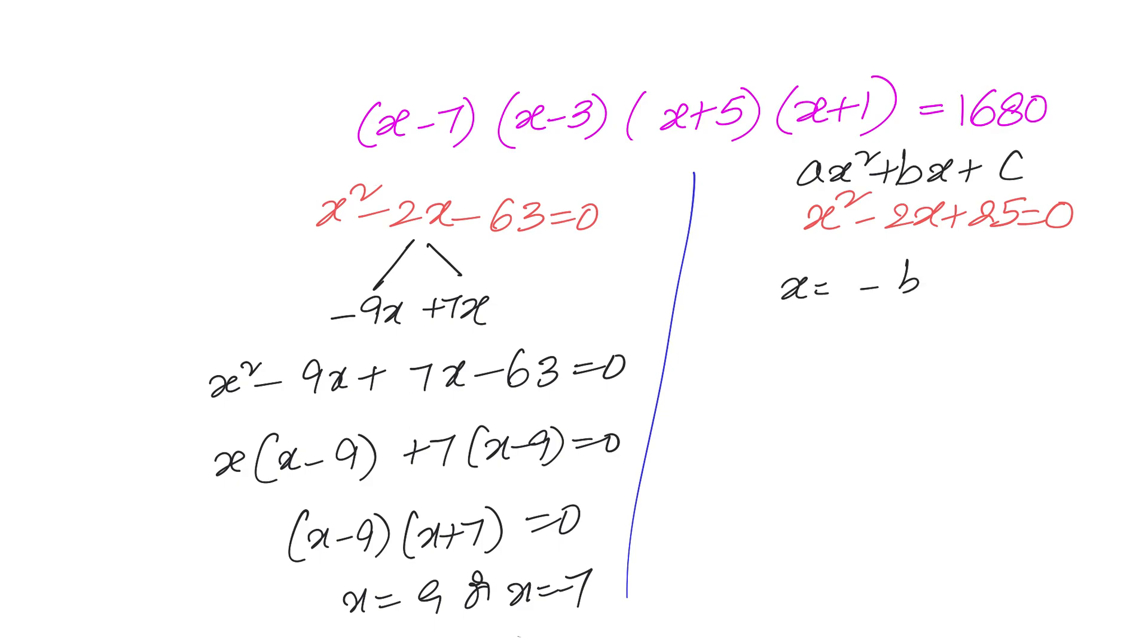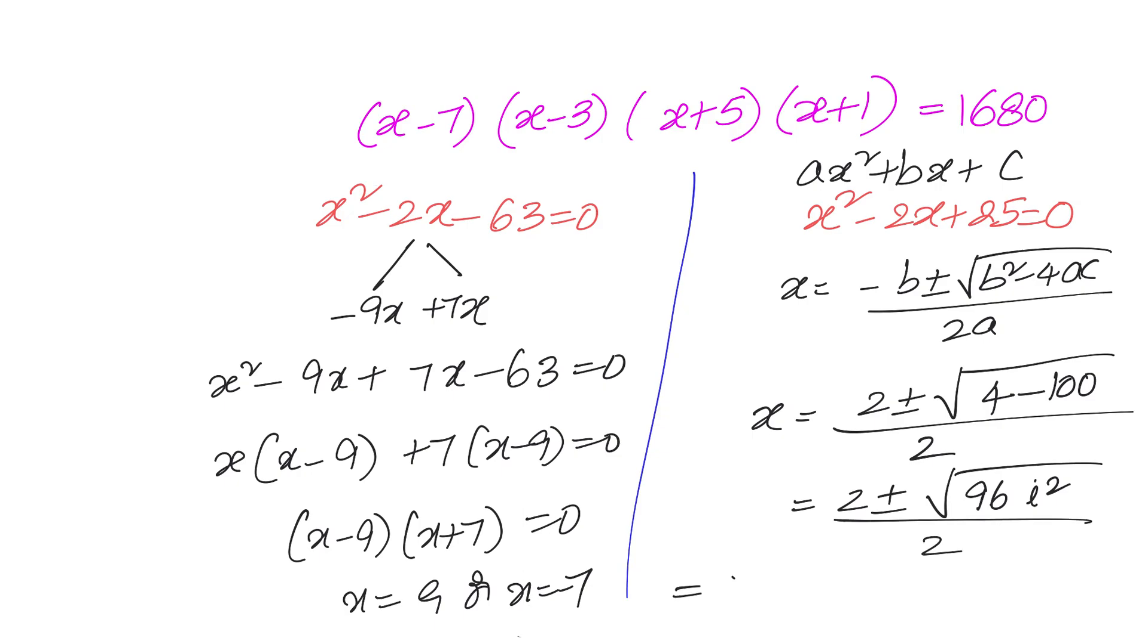So our x is given by minus b plus or minus square root of b square minus 4ac divided by 2a. So x equals to minus b, that is 2, plus or minus b square, that is 4 minus 4ac, minus 4ac that is minus 100, divided by 2. This equals to 2 plus or minus 96, minus 1 minus 96 is 96i square, divided by 2, which equals to 2 plus or minus 4 root 6i divided by 2, or which is nothing but equals to 1 plus or minus 2 root 6i.